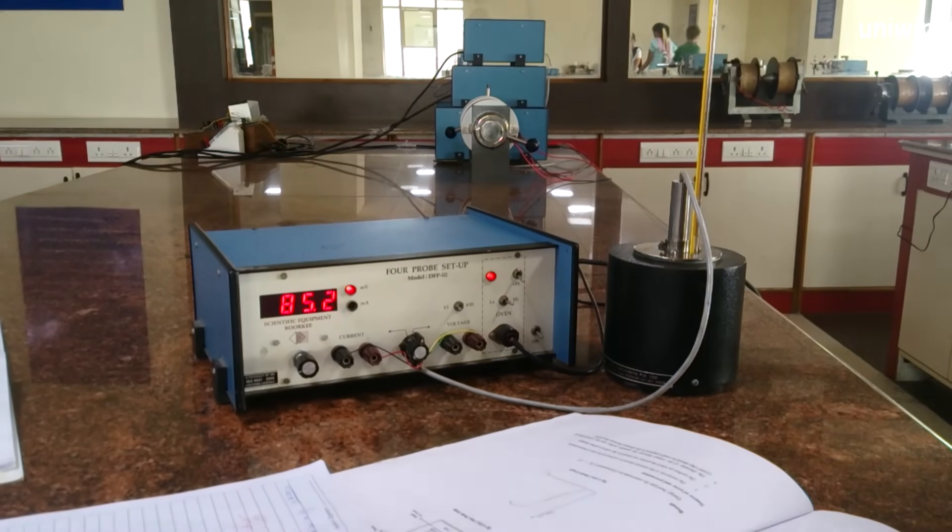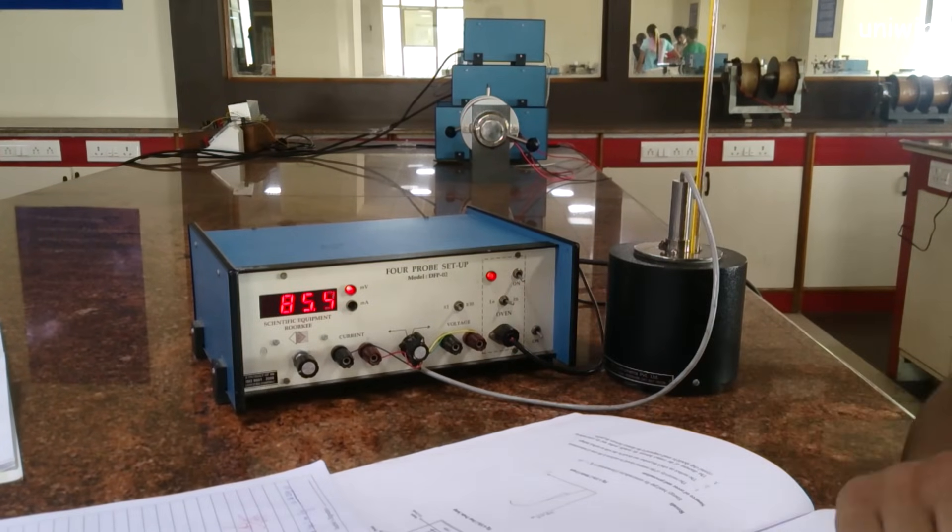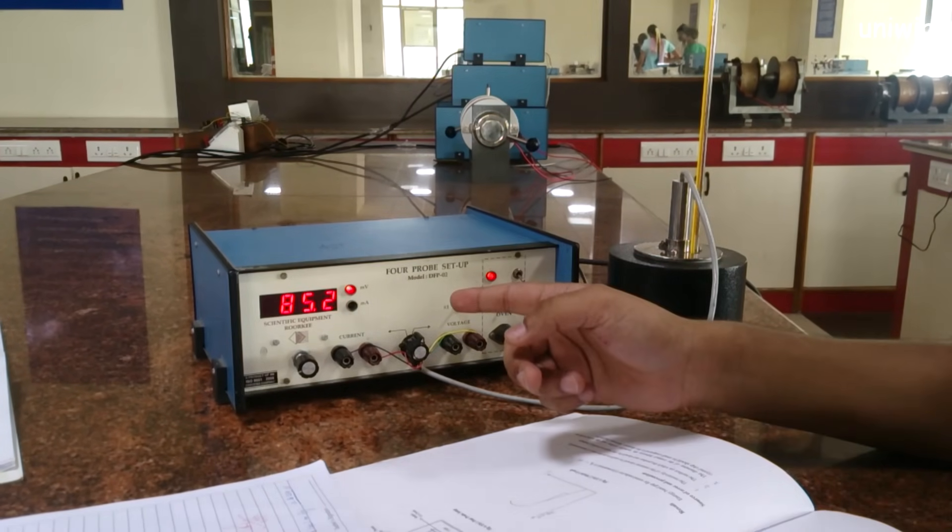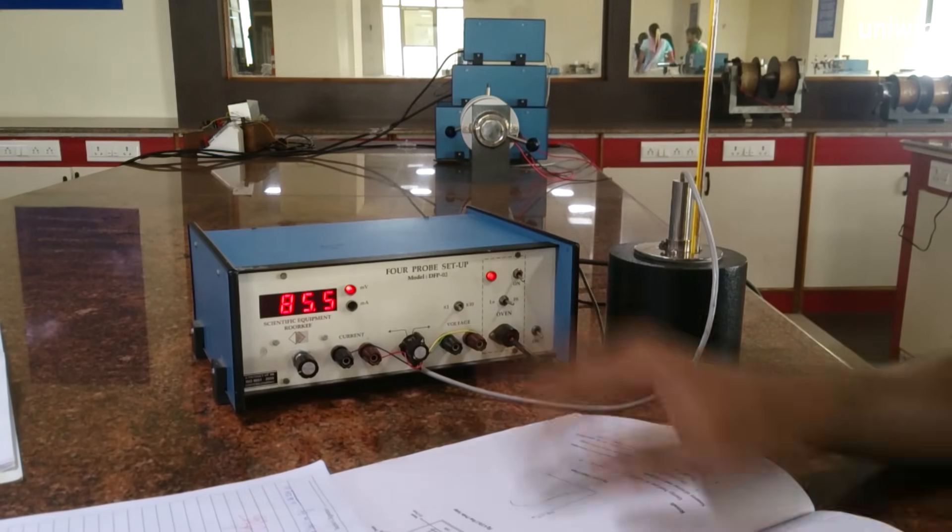And for your information, this experiment is the second half of the first experiment that is on your book. The first experiment is band gap determination, and this second half is using four probe method, the determination of resistivity of a semiconductor wafer. So yeah, my temperature is increasing. As you can see, as my temperature is increasing, my values also increase. So let this be for a while, I'll show you a sample.